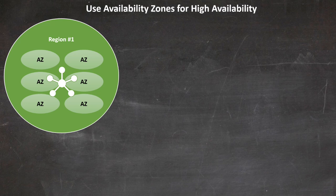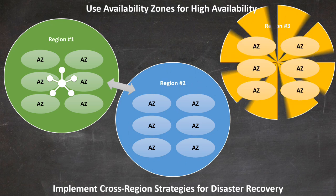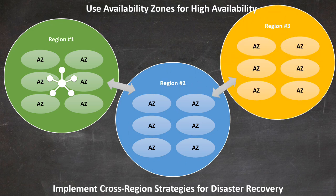For disaster recovery, we need to think beyond a single region. Implementing cross-region strategies involves replicating your services and data across geographically distant regions, safeguarding against large-scale disasters that could affect an entire region. It's crucial to have automated failover mechanisms to redirect traffic to the backup region if needed. However, it's important to balance resilience with cost considerations. Maximum resilience might involve deploying in multiple regions with real-time data replication, but this can be expensive. You need to assess your recovery time objectives, data consistency needs, and regulatory compliance, then design a solution that provides the right level of resilience without unnecessary overhead.